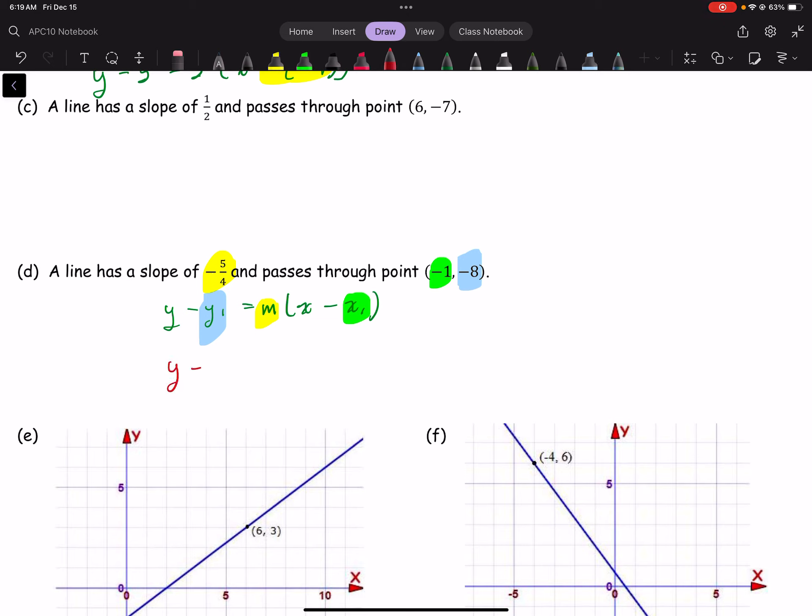y minus negative 8 equals negative 5 fourths x minus negative 1. So I just plugged in the values. Didn't do any thinking. We're just going to restate. Y, I'm going to restate this part. Y subtract negative 8, that would be y plus 8. Equals, notice how I just leave this as negative 5 fourths. It's going to communicate the idea that the slope is negative. Now, I'm going to subtract negative 1. And what I have here is x plus 1.